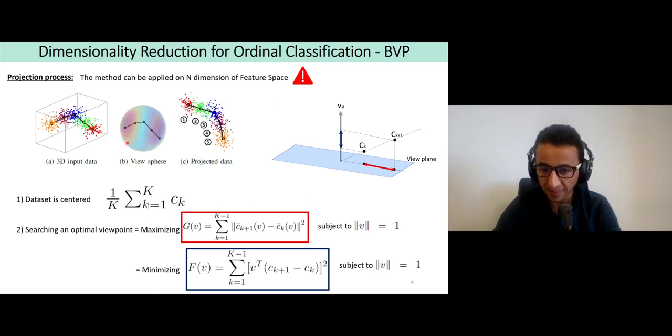The first step of this projection process is to center the data such that the mean center corresponds to the origin of the view sphere. Next, the objective is to find the optimal viewpoint such that when we look through this viewpoint we can see the classes as far from each other as possible. This means that the objective is to maximize this function that corresponds to the sum of Euclidean distance between the adjacent centers.